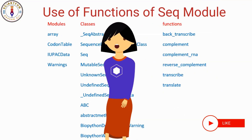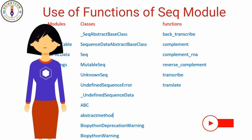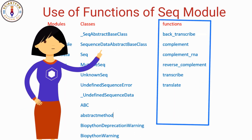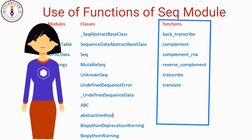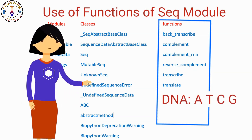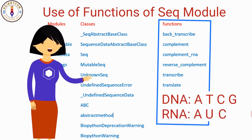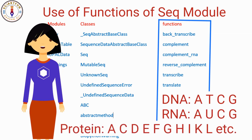Now let's come to our last objective — the use of these functions. Note: these functions are used on sequences, which are strings of letters composed of 4 letters of DNA, or 4 letters of RNA, or 20 letters of amino acids in the case of a protein sequence.